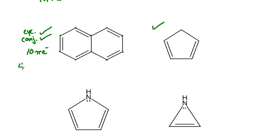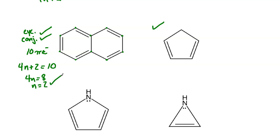Plugging into 4n + 2 = 10: subtract 2 to get 4n = 8, so n = 2. That is a whole integer, so we pass Hückel's rule and this compound is aromatic.